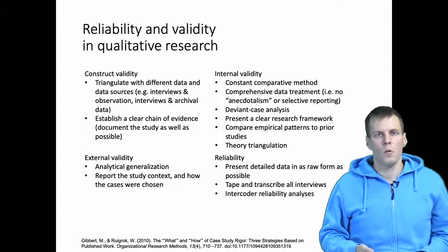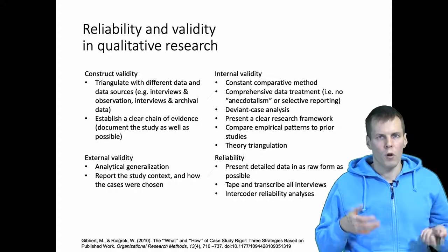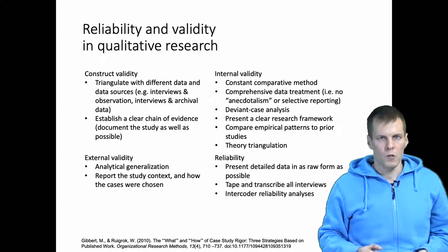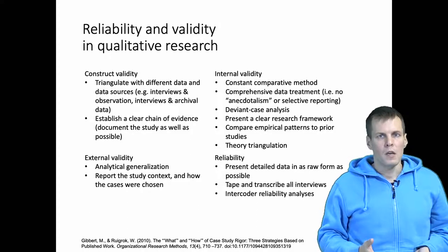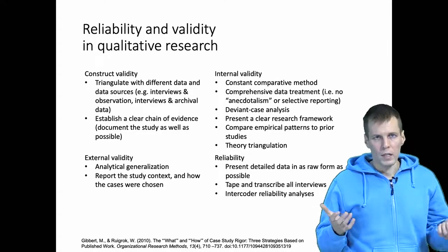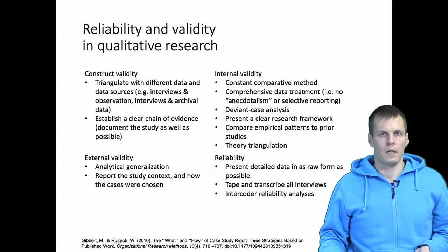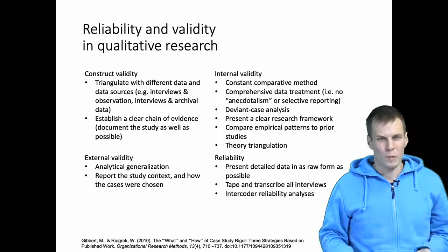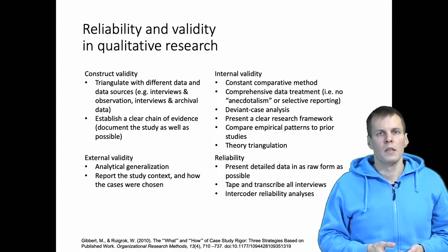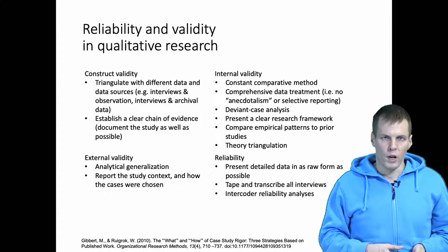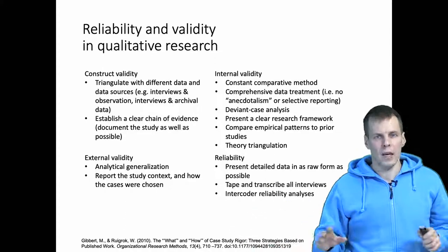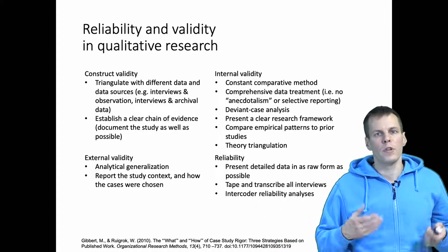In quantitative research, when you give numbers to the computer, the computer will always give you the same output. So if you calculate a correlation from one sample and then calculate the same correlation from the same sample again, the correlation will always be the same. This is not necessarily the case in qualitative research. If a person analyzes the data, they make interpretations based on their prior knowledge, and it is possible that if that person were to analyze the data again without remembering anything from the first round, the result would be different.